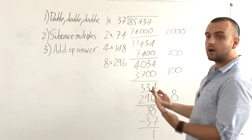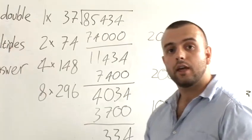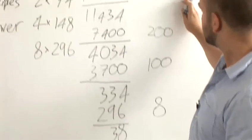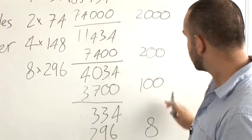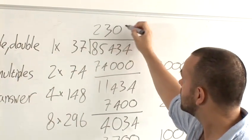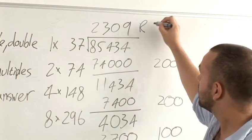Here, we've taken away just the first number, so 1 goes there. The answer is then simply got by adding together the numbers on the right-hand side. So 2,000 plus 200 plus 100 plus 8 plus 1 gives 2,309 with a remainder of 1.